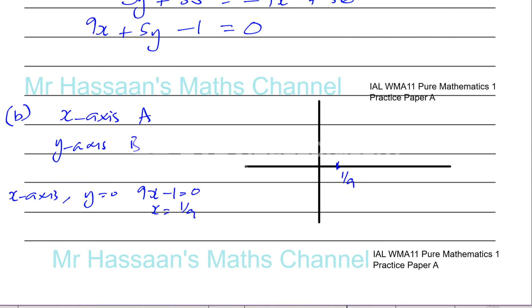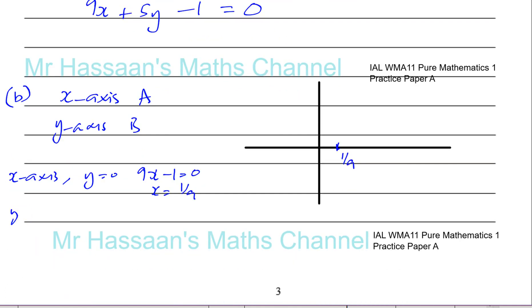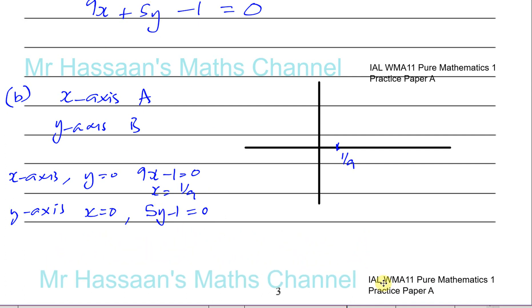It crosses the Y-axis when X is 0. So when X is 0, you have 5Y - 1 = 0, thus Y = 1/5. Very close to the origin, both of these.